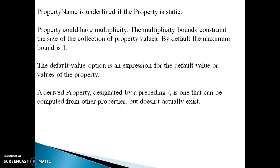The property name is underlined if the property is static. The property could have multiplicity, which bounds or constrains the size of the collection of property values. By default the maximum bound is 1. The default value option is an expression for the default value of the property. A derived property, designated by a preceding slash, is one that can be computed or calculated from other properties but doesn't actually exist.